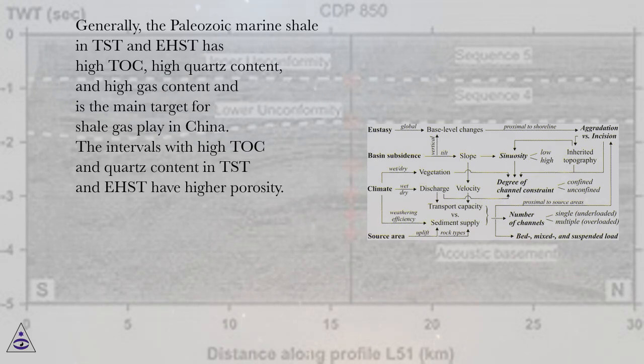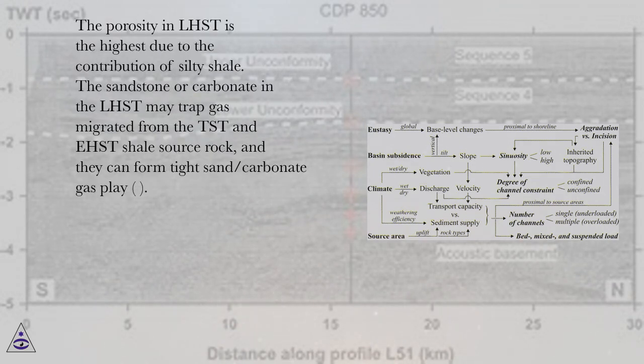The intervals with high TOC and quartz content in TST and EHST have higher porosity. The porosity in LHST is the highest due to the contribution of silty shale. The sandstone or carbonate in the LHST may trap gas migrated from the TST and EHST shale source rock, and they can form tight sand/carbonate gas play.